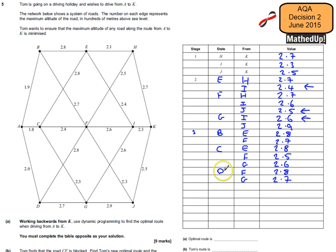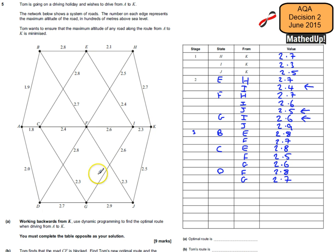Considering D to G: knowing the best route from G is to I then to K, that still gives a maximum altitude of 2.7. Comparing that to D to F, where the best from F was J — so D to F to J to K — that gives a maximum altitude of 2.8. So D to G is better than D to F. The minimum from C is 2.5, and the minimum from B is 2.7 via F.